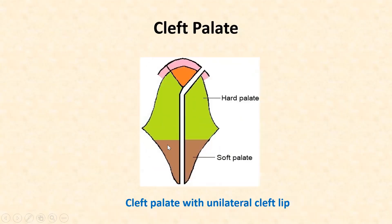By definition, defective fusion of the components uniting to form the palate leads to a cleft palate. In the figure we can appreciate the cleft in the palate — the three components which were supposed to unite have not done so in a proper manner, leading to formation of the cleft.